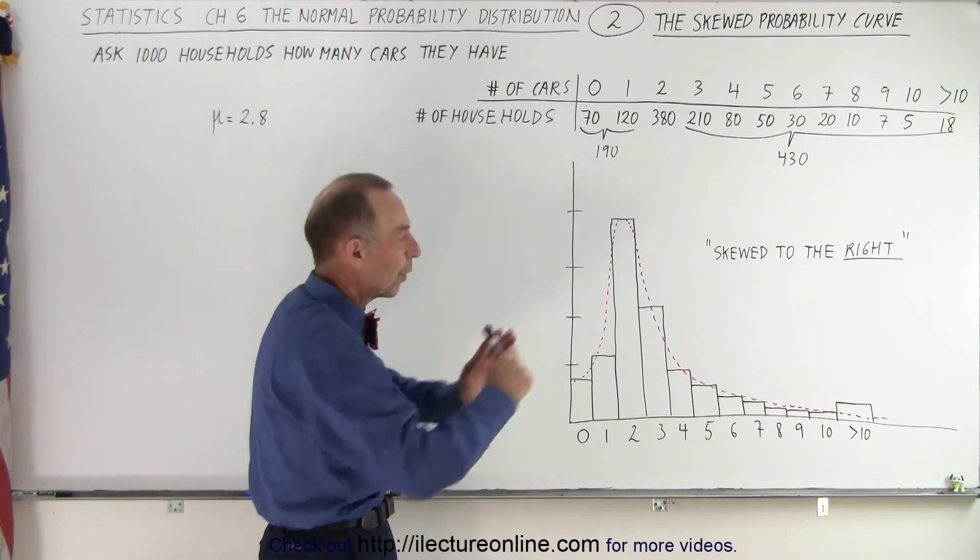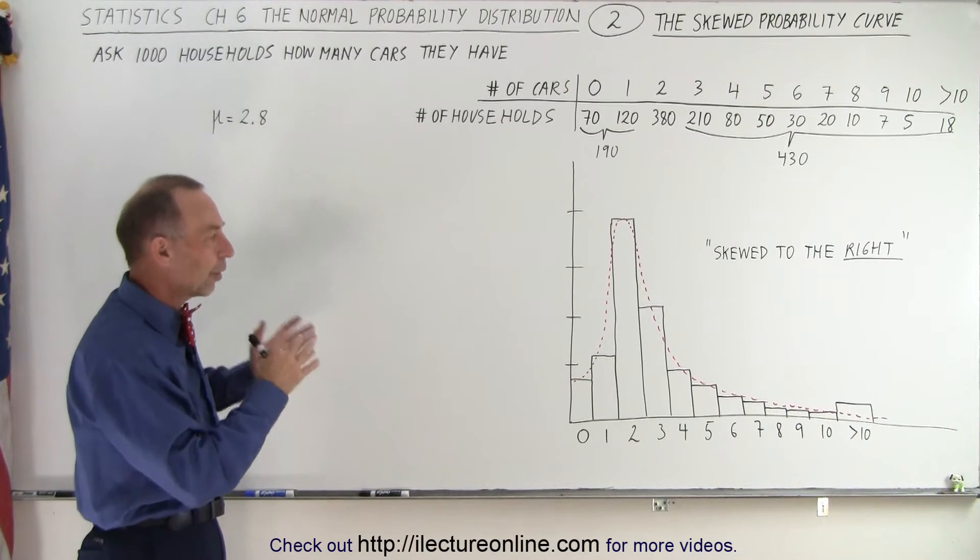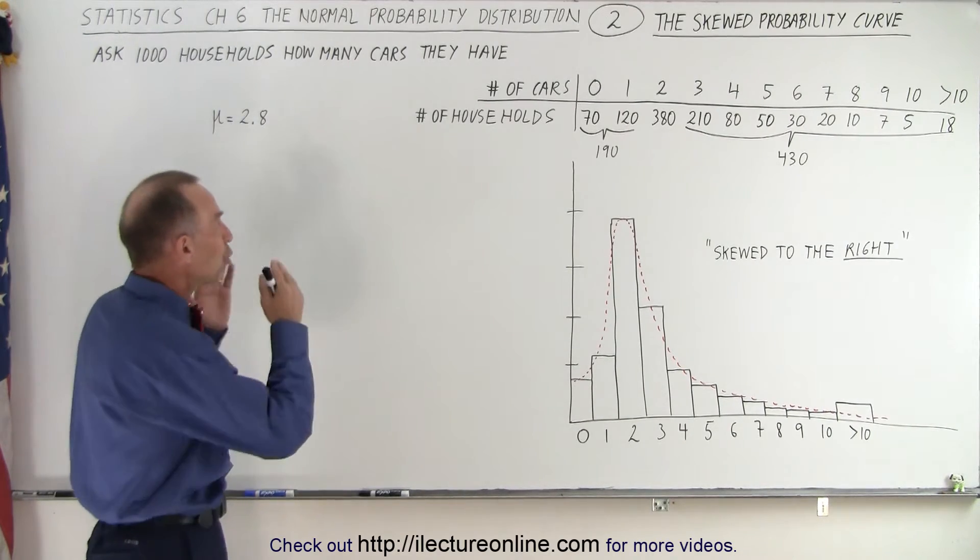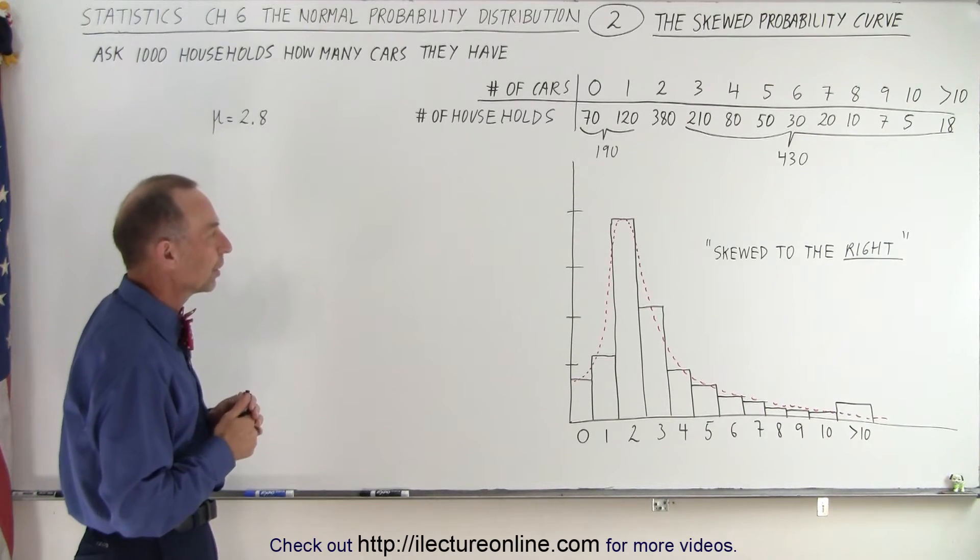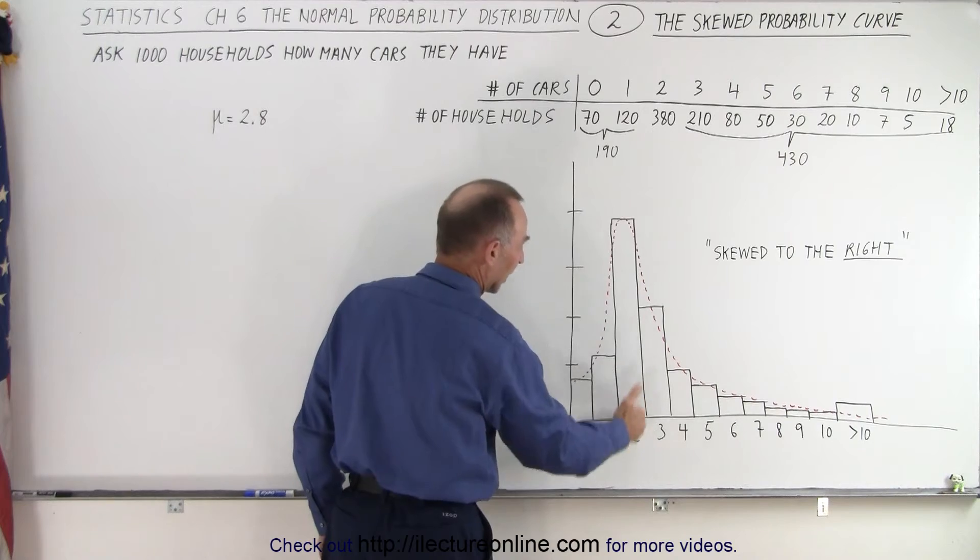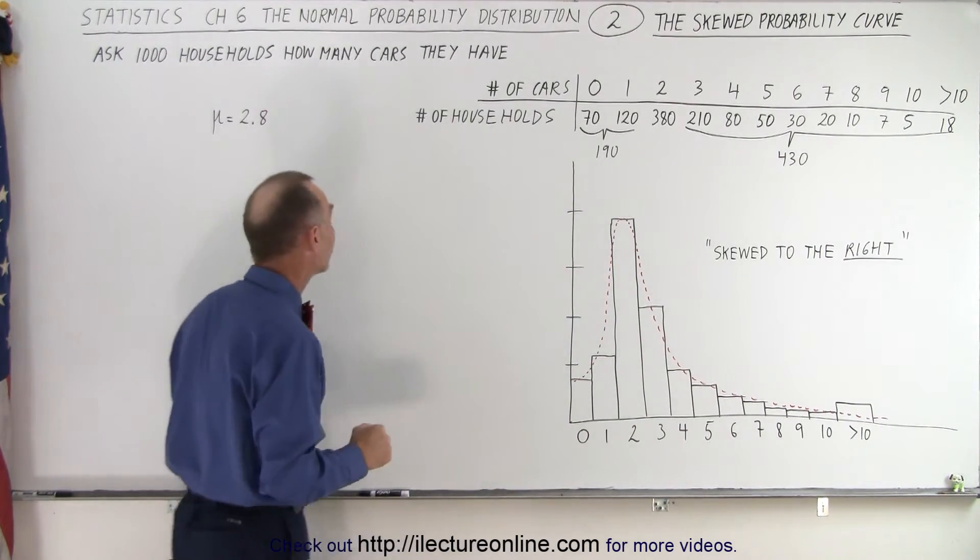And that's why things are skewed to the right in this particular presentation. So you can see that there are abnormalities on this curve that doesn't make it a normal probability distribution. Also note that the maximum probability occurs when a family has two cars. More families have two cars than any other number of cars.